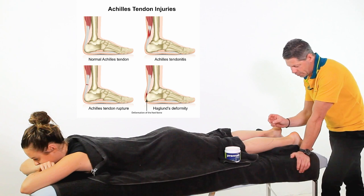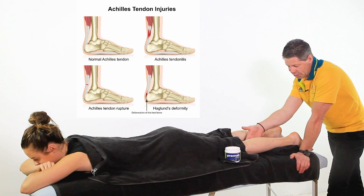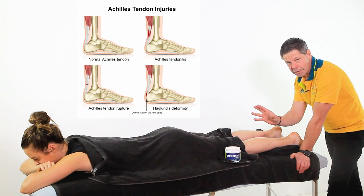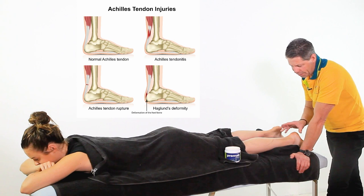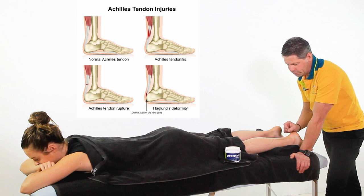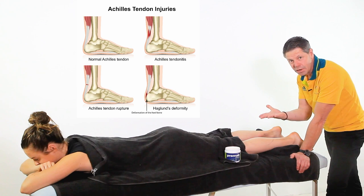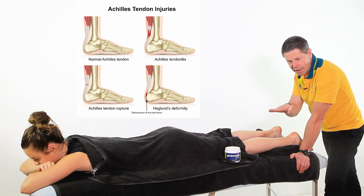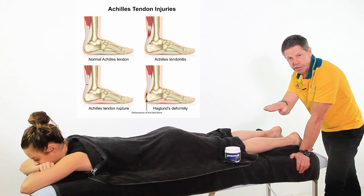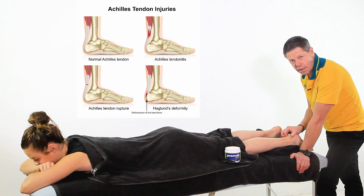Tibialis posterior is really important for Achilles tendon pain as well, since it controls foot placement during heel striking. If it's loaded or inhibited, it allows excessive overpronation, creating a whipping action on the Achilles. The tib post trigger point can also refer down into the Achilles — so it's a must-address area for all lower leg conditions.